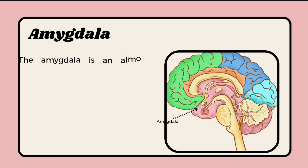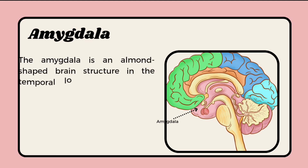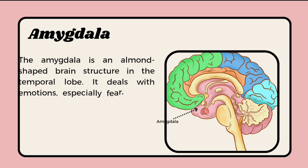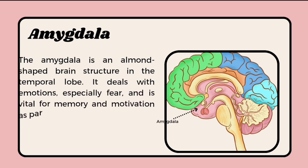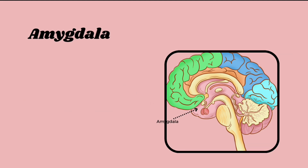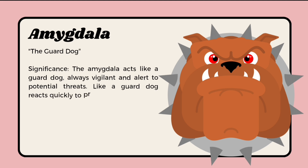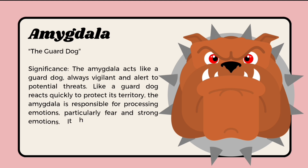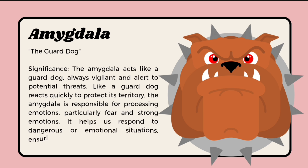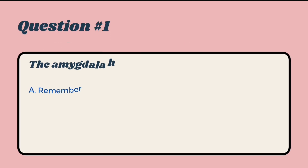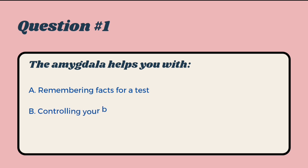The amygdala is an almond-shaped brain structure in the temporal lobes. It deals with emotions, especially fear, and is vital for memory and motivation as part of the limbic system. The amygdala acts like a guard dog — always vigilant and alert to potential threats. Just like a guard dog reacts quickly to protect its territory, the amygdala is responsible for processing emotions, particularly fear and strong emotions.